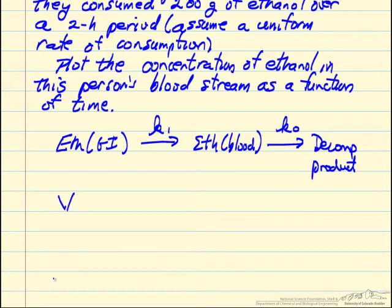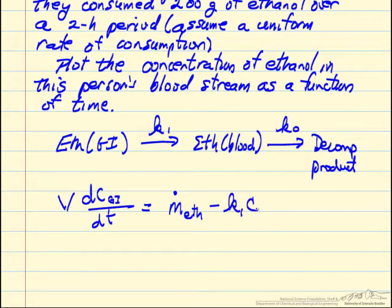The volume of the body fluid times the change in the concentration in the GI tract as a function of time is due to two things. One is that we're feeding ethanol—it's consumed ethanol—so there's some mass flow rate of ethanol into the GI tract, and then this first order reaction, concentration of ethanol in the GI tract times the volume.